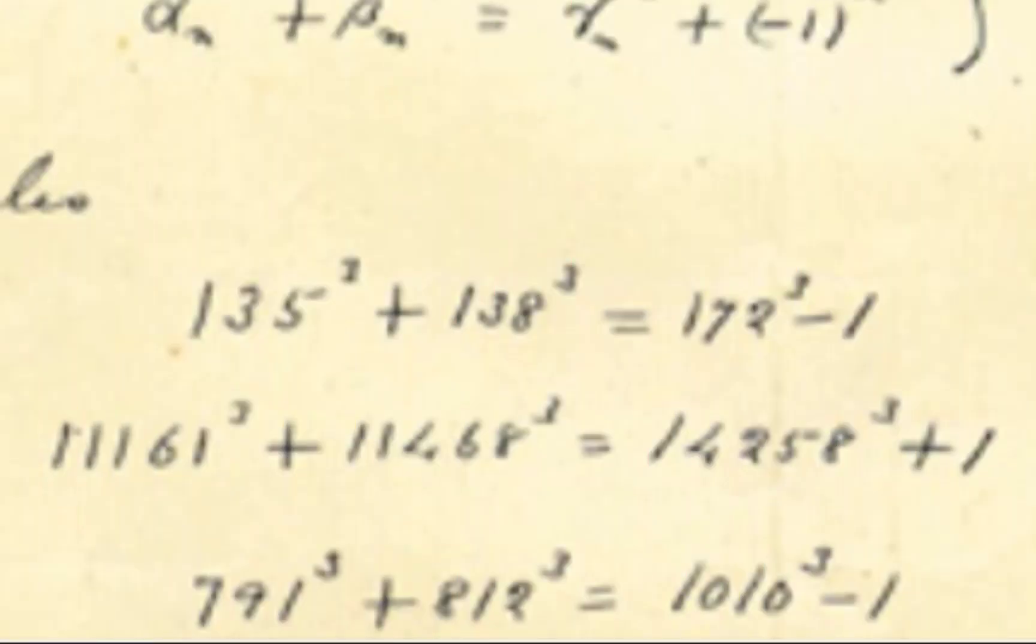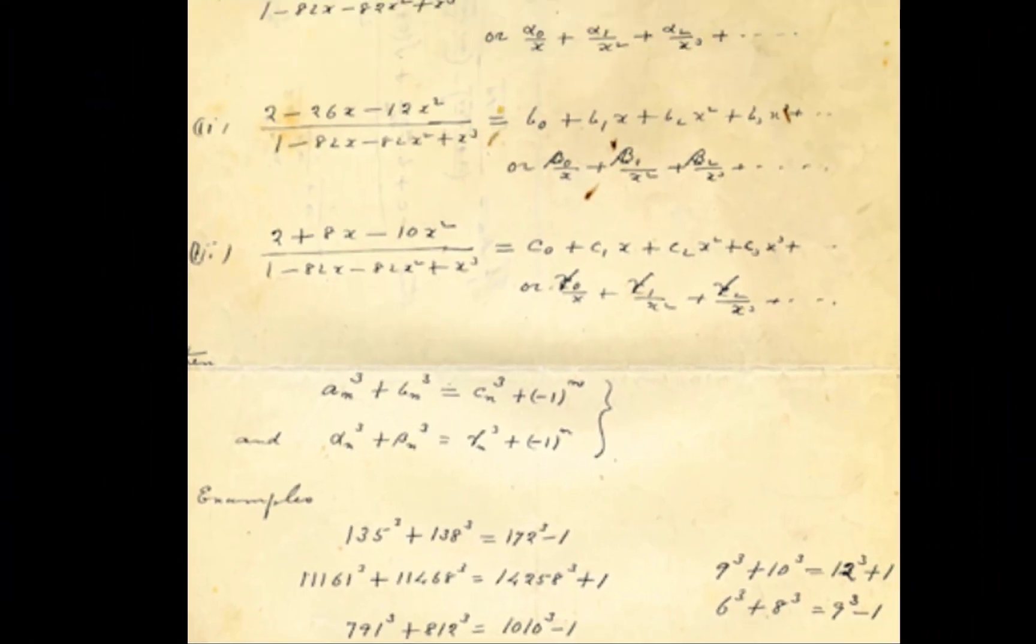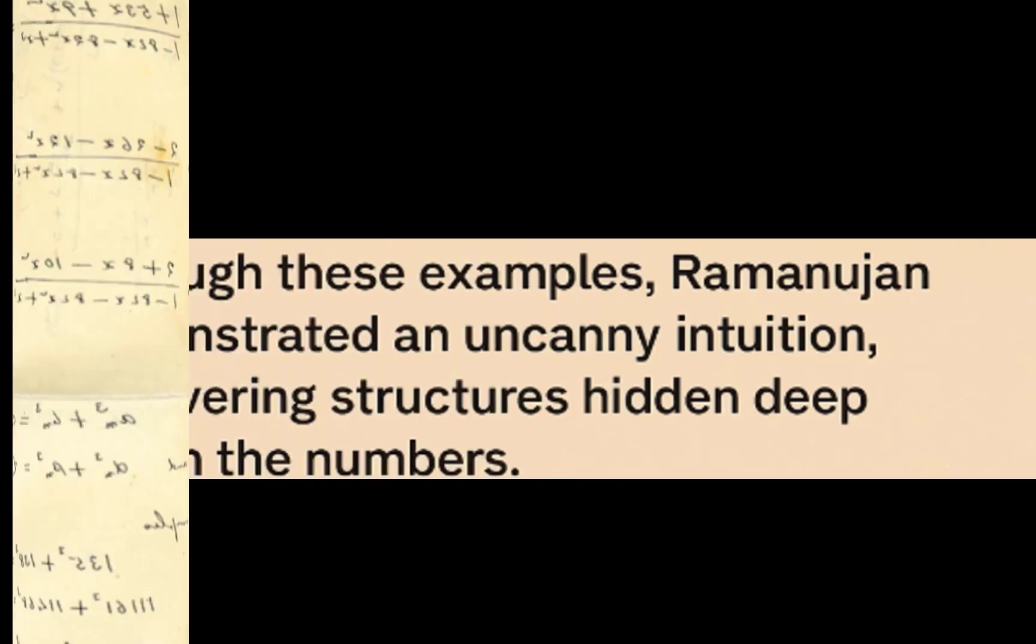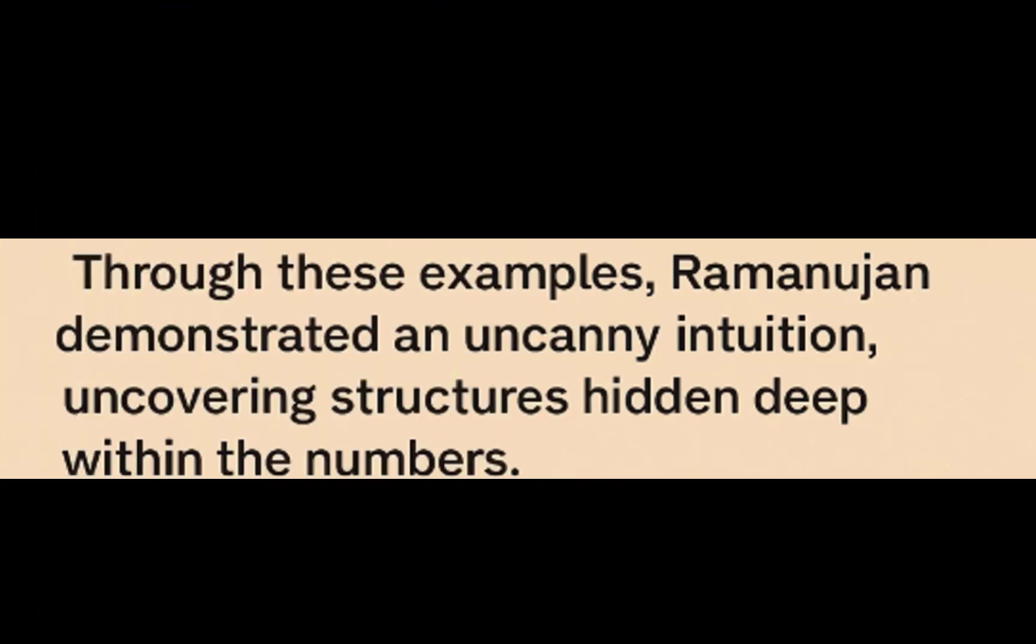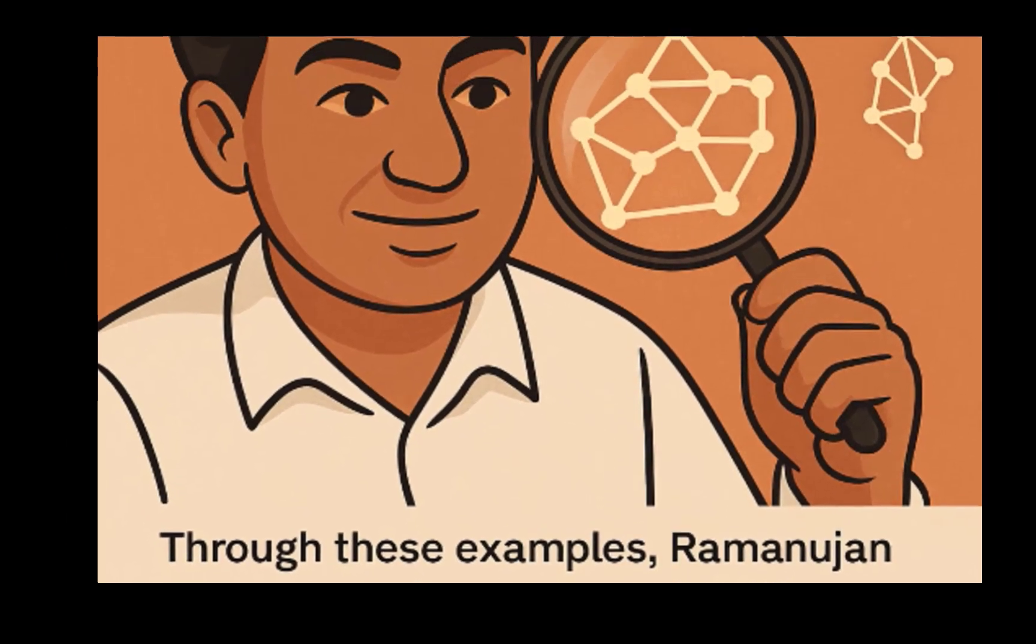Ramanujan didn't stop at one example. In fact, his notebooks, rediscovered long after his death, contained infinitely many of these near misses. Through these examples, Ramanujan demonstrated an uncanny intuition uncovering structures hidden deep within the numbers.